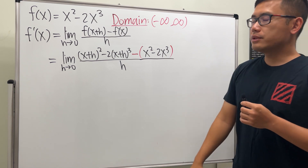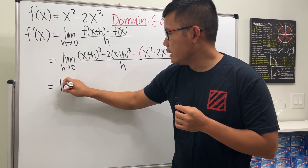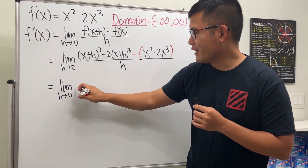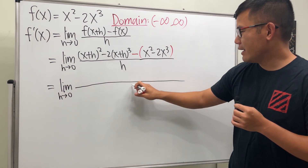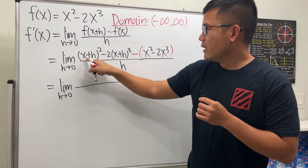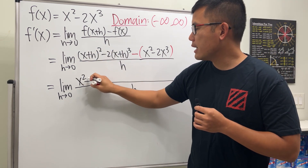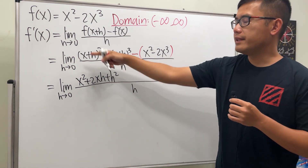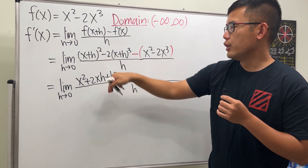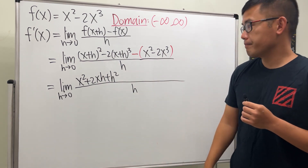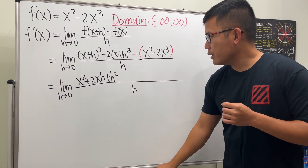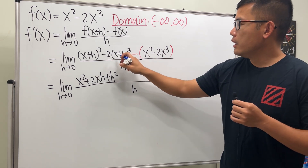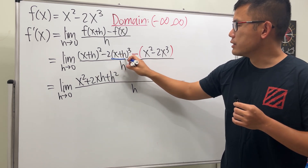We're going to multiply this out. Opening up the squared term, we get x squared plus 2xh plus h squared. You can write it down twice and multiply out, or just remember the binomial expansion. We also need to distribute the negative two through the cubic term.